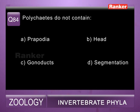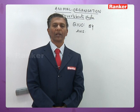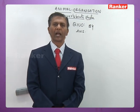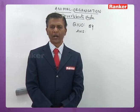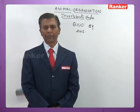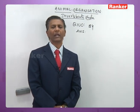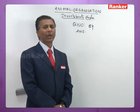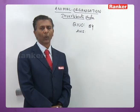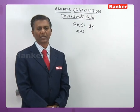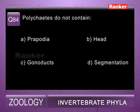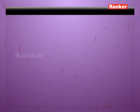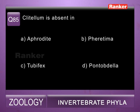Question eighty-four: polychaetes do not contain — a) parapodia, b) head, c) gonoducts, d) segmentation. Polychaetes have parapodia (locomotor organs), distinct head, and exhibit segmentation. However, in Polychaeta gonoducts are absent; gonoducts are present in Oligochaeta and Hirudinea. So eighty-fourth question correct answer is c) gonoducts.